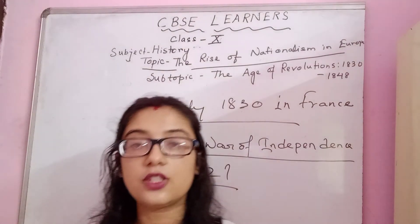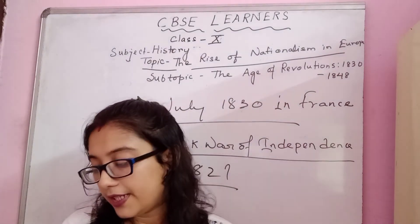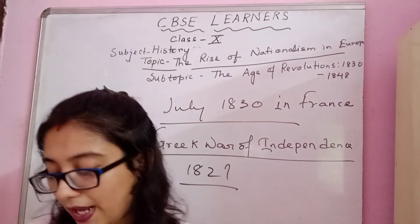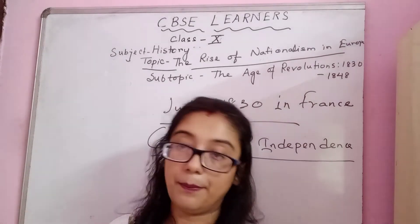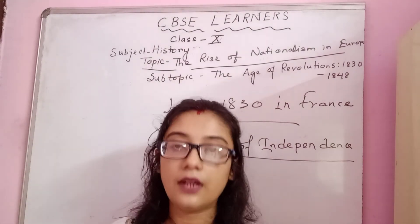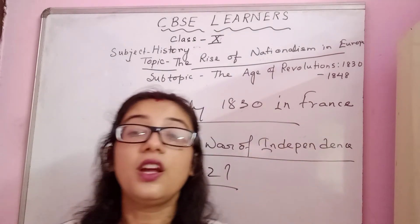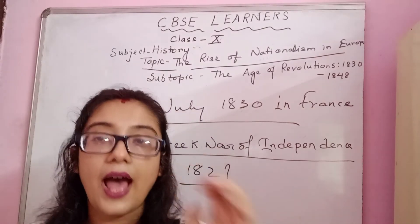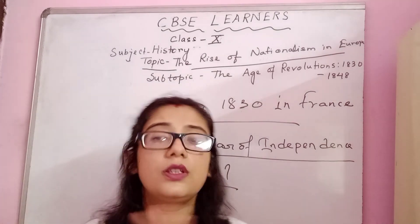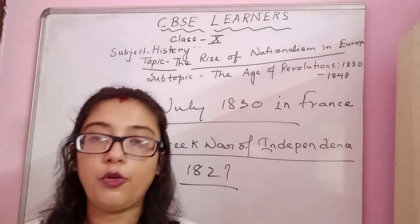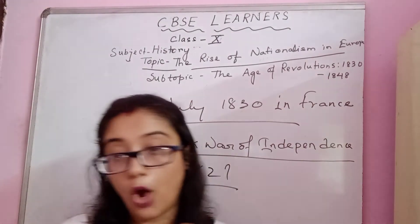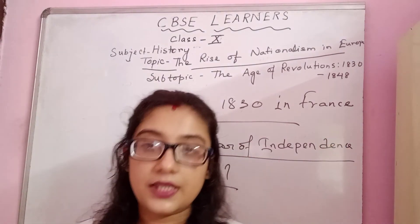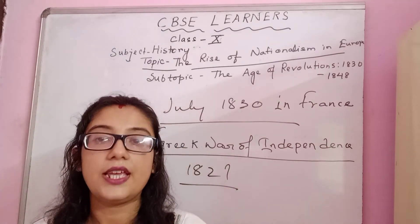There were many West Europeans who had sympathies for Greek culture. Poets and artists called Greece the cradle of European civilization and mobilized public opinion to support its struggle against a Muslim empire. They made people aware of the Greek culture and said that the Muslim power ruling the Greeks was an alien power — not equal to the Greeks — and thus felt sympathy for Greece and accelerated the revolution.